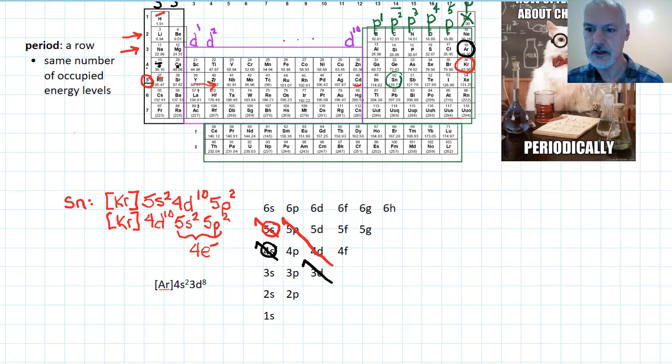Then I proceed to fill up the 3d next, and I'm going to fill it up with 8 electrons. So 1, 2, 3, 4, 5, 6, 7, 8 arrives at nickel. So this would be the electron configuration of the element nickel.